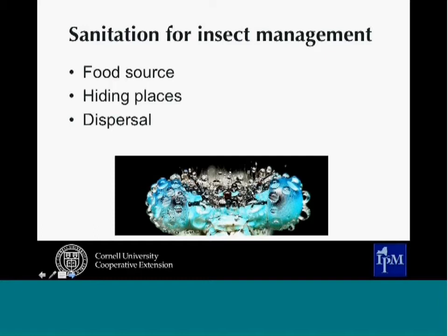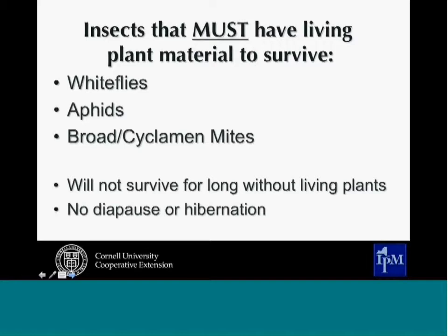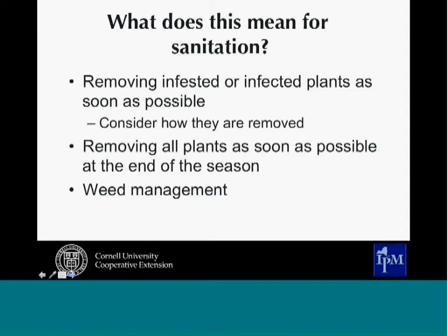For insect management, we consider three things from the insect's point of view: food sources, hiding places, and dispersal. These are aspects of the insect life cycle we can affect through sanitation and cultural control. For example, certain insects in the greenhouse — whiteflies, aphids, and broad or cyclamen mites — must have living plant material to survive. They don't have diapause or hibernation, and can't survive in cracks in benches or the structure.